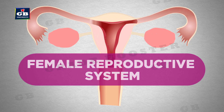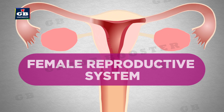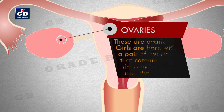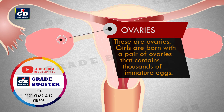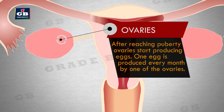Female reproductive system. In this video we will see the structure and functioning of different parts of the female reproductive system. Ovaries: girls are born with a pair of ovaries that contain thousands of immature eggs. After reaching puberty, ovaries start producing eggs; one egg is produced every month.